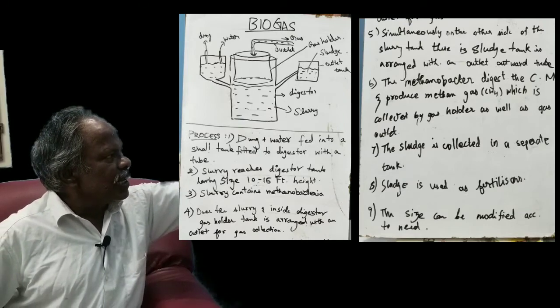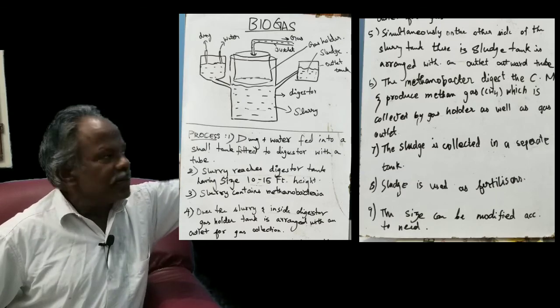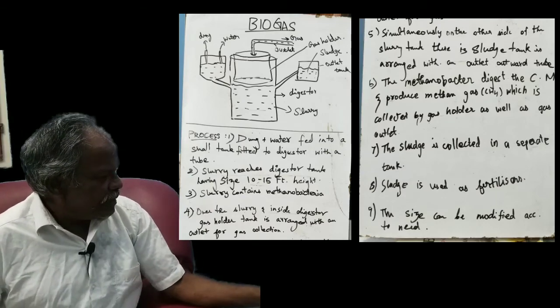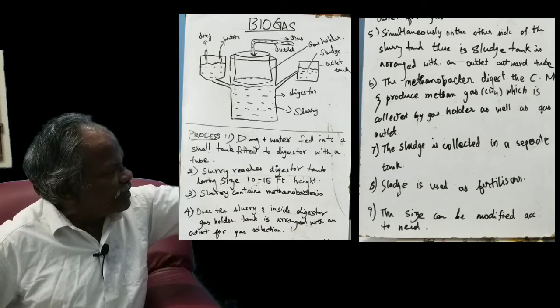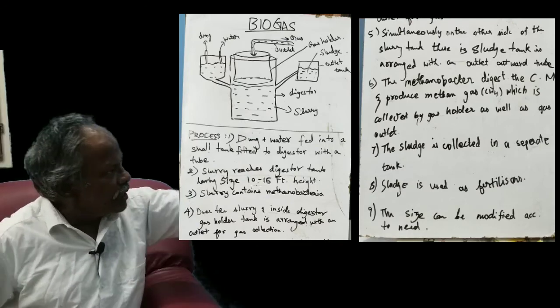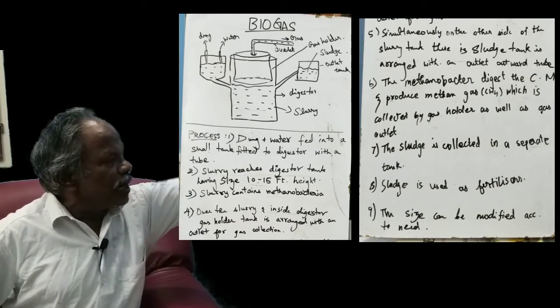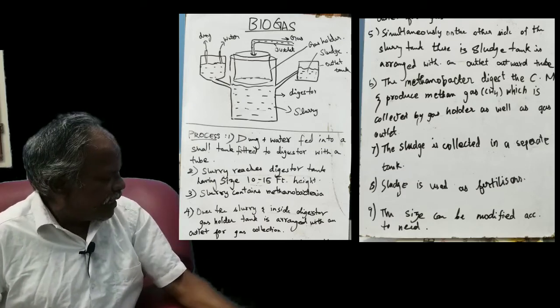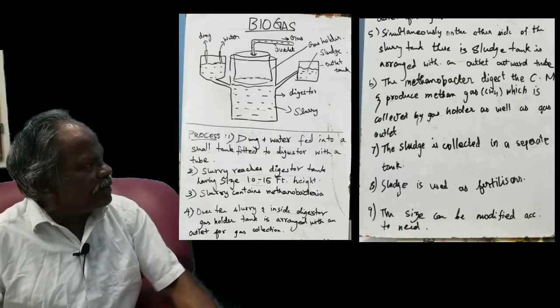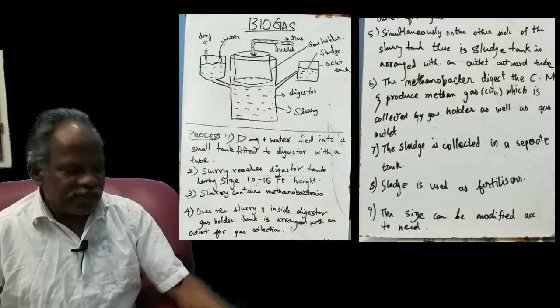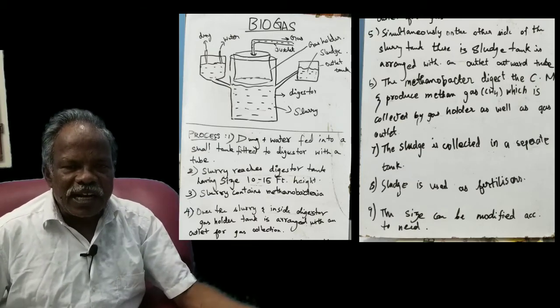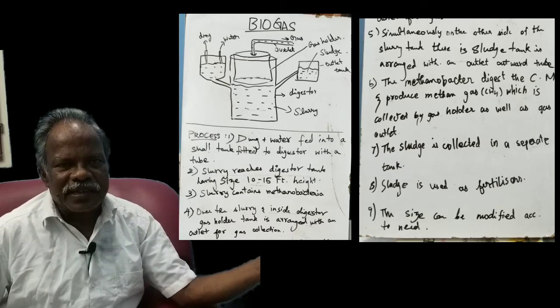The gas goes through the gas outlet, that is a tube arrangement. After the process is over, the sludge is collected in a tank attached to the digester through an upright tube. This is the biogas plant. The sludge which is collected can be used as fertilizer. The size of the digester can be modified according to the need.